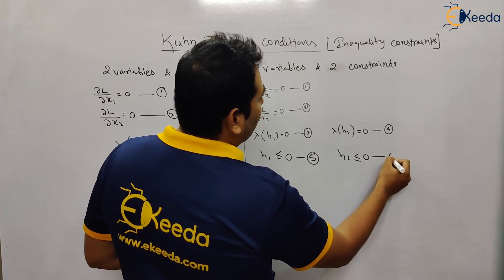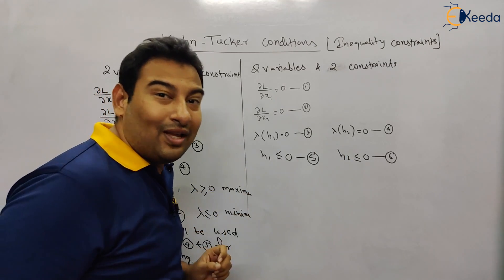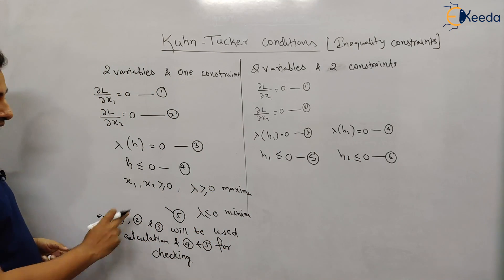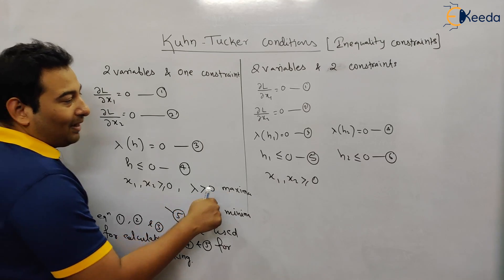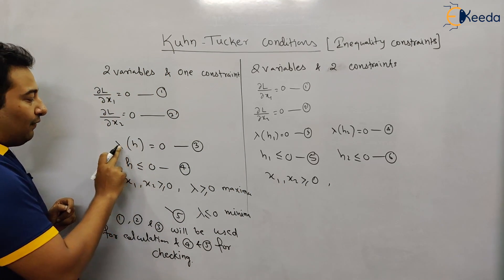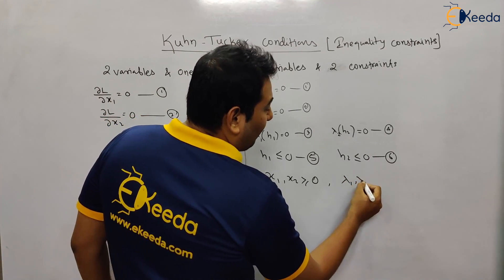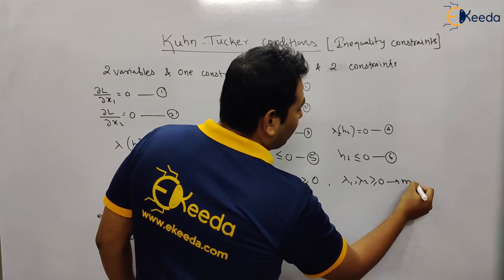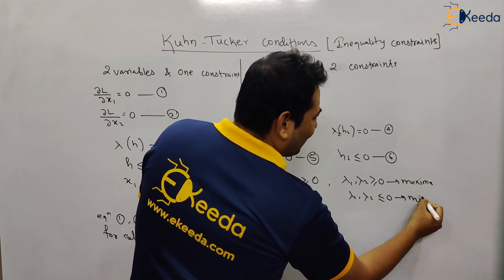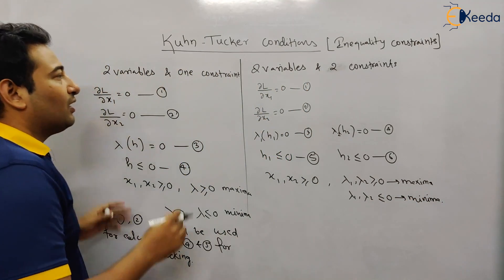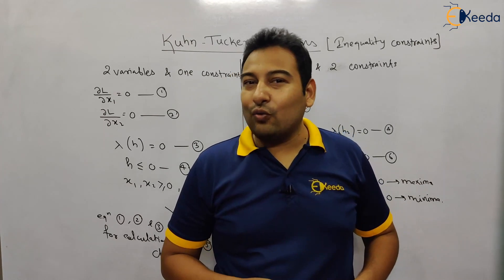Condition four: two constraints mean h1 ≤ 0 and h2 ≤ 0. Condition five: x1, x2 ≥ 0. Since there are two constraints there are two multipliers: lambda1 and lambda2. If both lambda1 and lambda2 are greater than or equal to zero, it is a maxima; if both are less than or equal to zero, it is a minima. Copy these conditions — in the next videos we'll discuss how to use them.